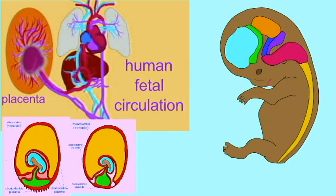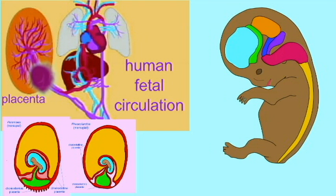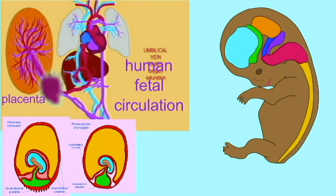Marsupials are technically placentals, in that they do form a placenta using a chorion, but the majority of them use blood vessels from the yolk sac.